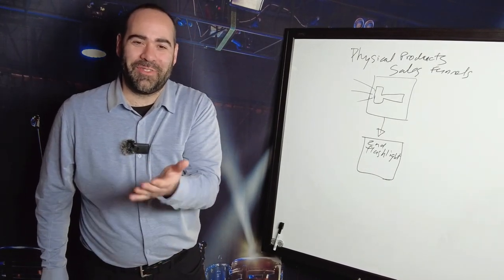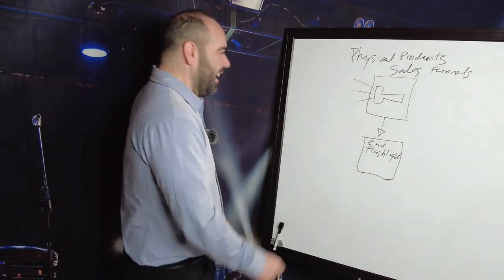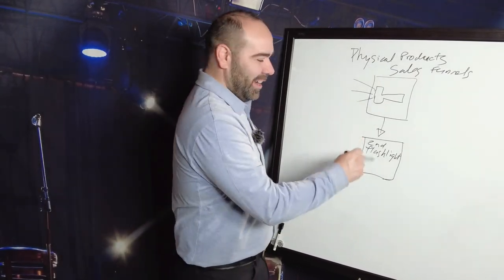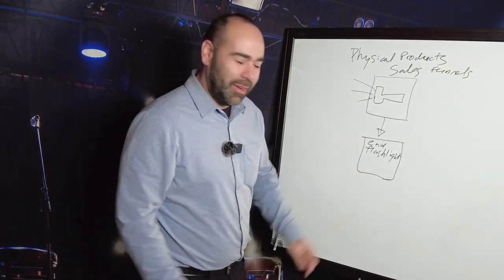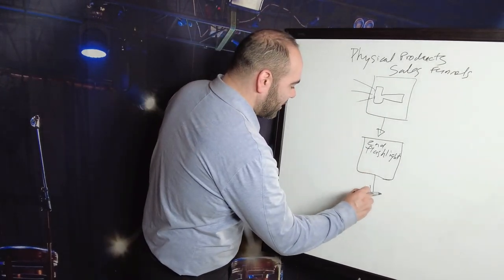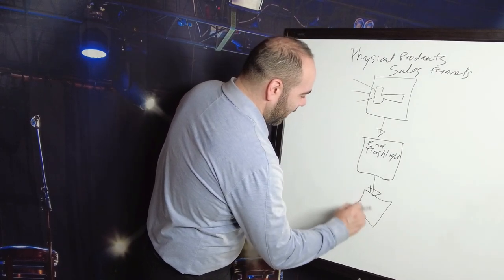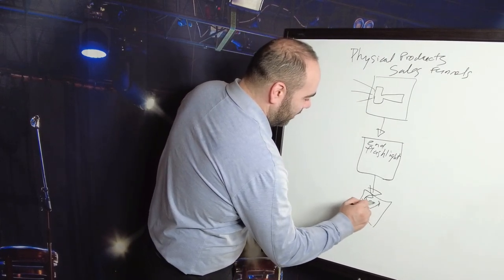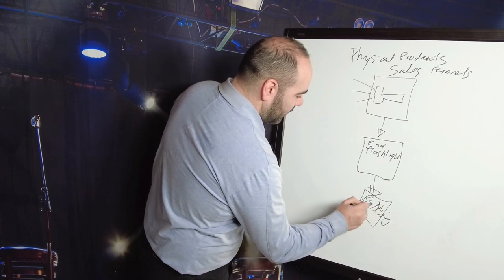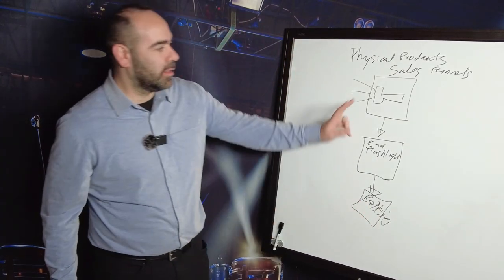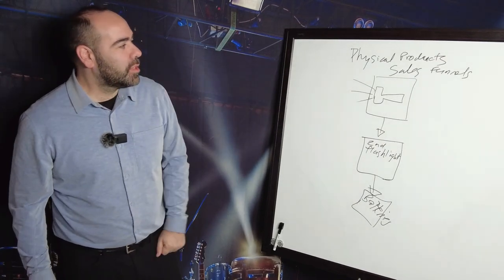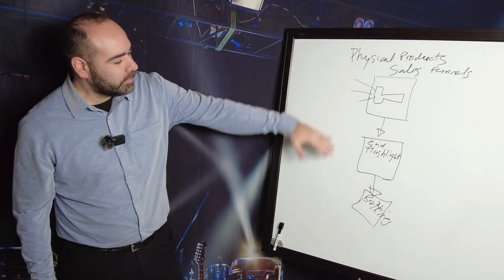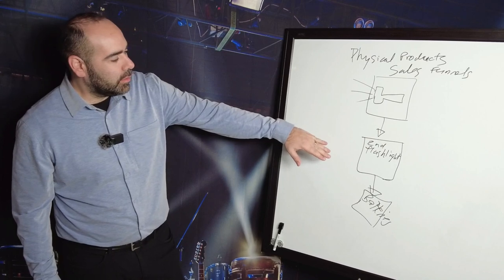Second flashlight, that's the upsell. Now what about another upsell? What about the batteries for that flashlight? So that can be another upsell, or this would be more of a cross-sell because it's a related product to the one you're originally buying. So this is how you can use different sales funnel sequences to sell physical products.